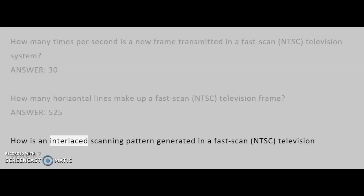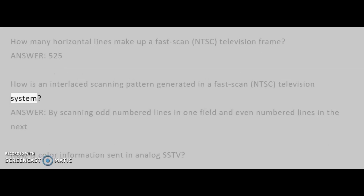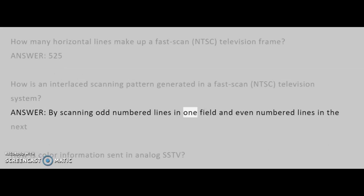How is an interlaced scanning pattern generated in a fast-scan NTSC television system? Answer: By scanning odd-numbered lines in one field and even-numbered lines in the next.